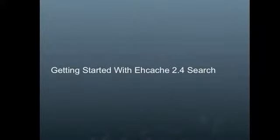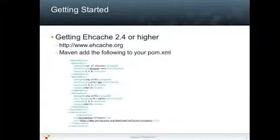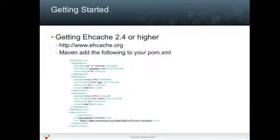In this next section, we will go through the steps needed to get started with eHcache 2.4 and search. The two most common ways to get eHcache 2.4 are through the eHcache.org website and Maven. Below, I've included the portion of the Maven pom.xml file needed to automatically add the eHcache 2.4 library into your codebase.